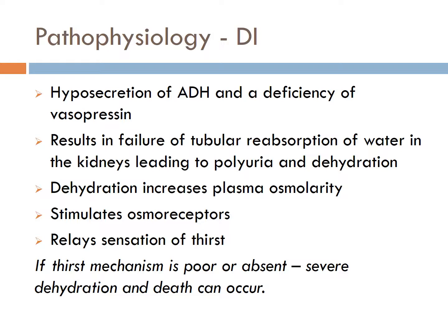In central DI, the production or release of ADH is too low to stop the kidneys from passing dilute urine, resulting in increased loss of water or polyuria. People with nephrogenic DI have adequate amounts of ADH but the kidneys fail to respond, again resulting in polyuria with a very low urine specific gravity less than 1.005 and very low urine osmolality less than 100 mOsm. Loss of water by the kidney results in hypernatremia, which increases thirst. Dehydration and resulting hypernatremia causes increased plasma osmolality, stimulating osmoreceptors and the thirst center, so the patient experiences severe polydipsia.